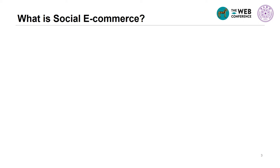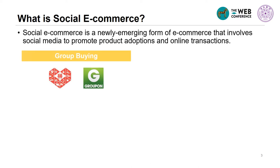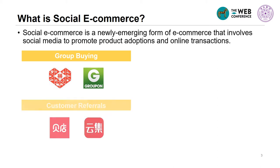What is Social E-Commerce? Social E-Commerce is a newly emerging form of e-commerce that involves social media to promote product adoptions and online transactions. There are two types of most successful social e-commerce platforms. One facilitates group buying, which allows customers to invite others to purchase together, so that members in the formed group can all get a discount, like Pinduoduo and Groupon. The other promotes customer referrals, which is a commission fee to encourage customers to recommend items to their relatives and friends, like Beidian and Winji.